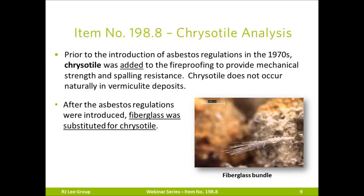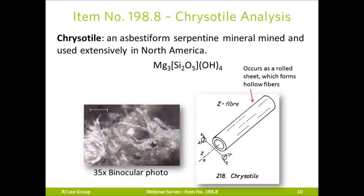Prior to the introduction of asbestos regulations in the 1970s, chrysotile was added to the fireproofing to provide mechanical strength and spalling resistance. Chrysotile does not occur naturally in vermiculite deposits. After the asbestos regulations were introduced, fiberglass was substituted for chrysotile. Chrysotile is an asbestiform serpentine mineral mined and used extensively in North America. It is a magnesium sheet silicate and occurs as rolled sheets which form hollow fibers.